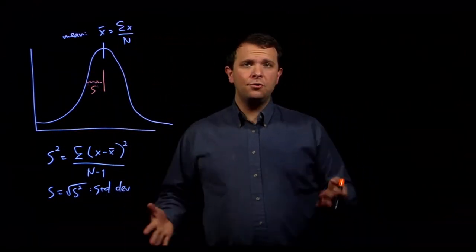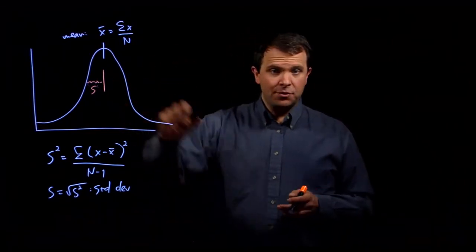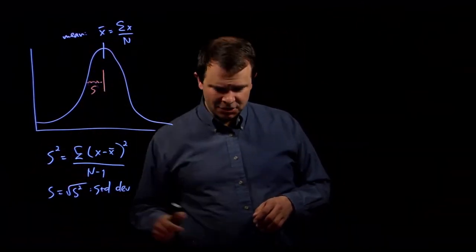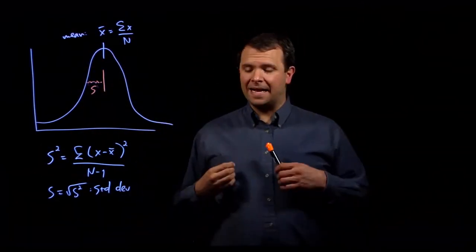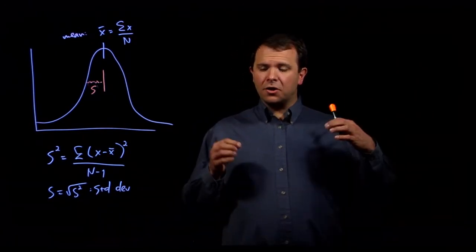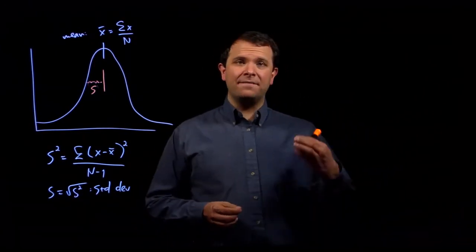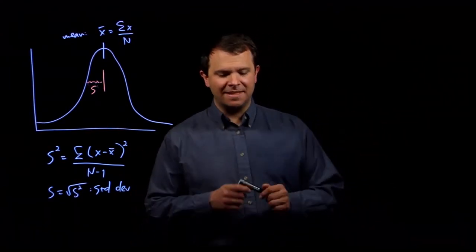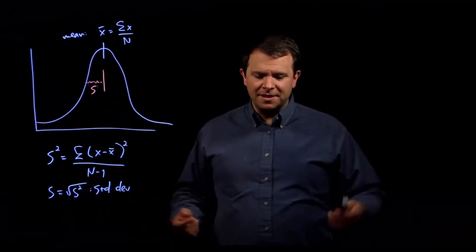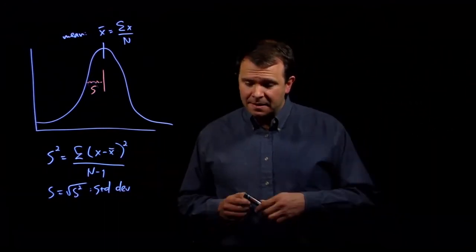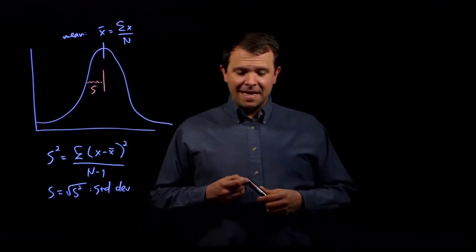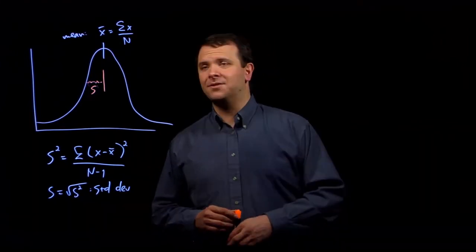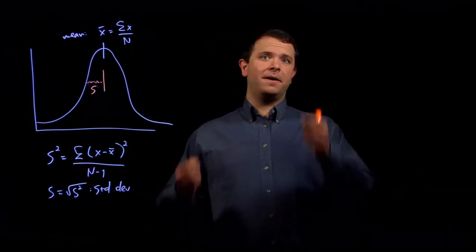So two more quick points before we leave the normal distribution. And the first is that x bar and s squared, the mean and the variance, are computed using a set of observations. They're computed using a sample, using a set of measurements. And so we might find a thousand people and measure their height. But what we're really interested in is how the height is distributed in the underlying population. So not a thousand humans, but all humans.